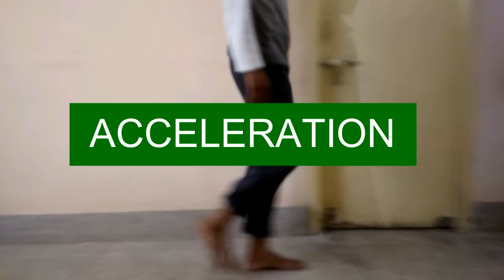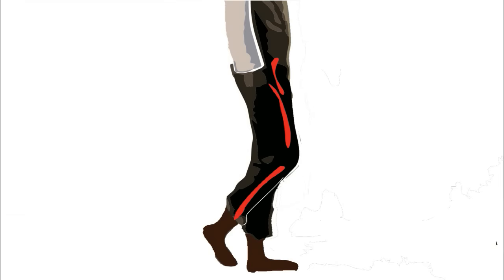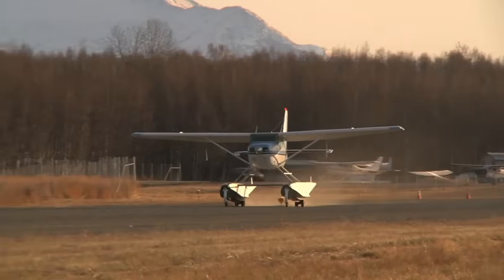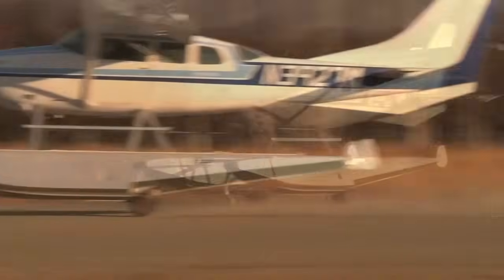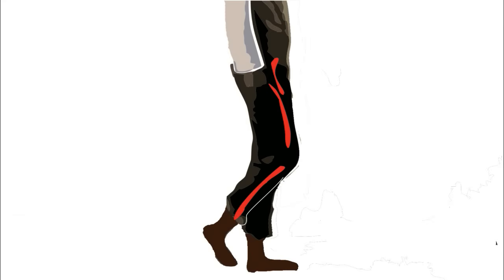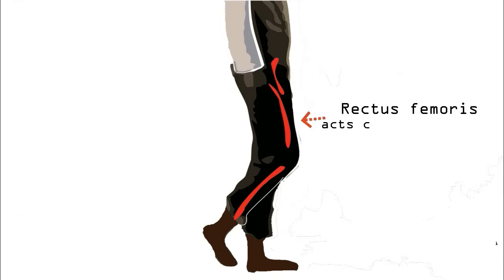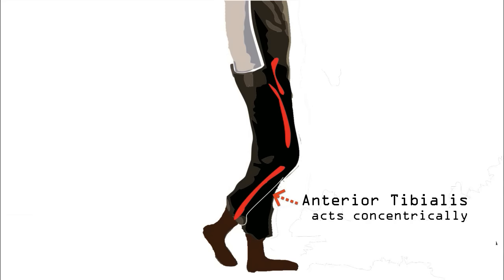Acceleration is a continuation of toe off when the leg just leaves the ground. After leaving the ground, the muscles act to gather the momentum to propel the leg forward. This is the result of action of the following muscles: the anterior tibialis acts concentrically to flex the hip; the rectus femoris acts concentrically to extend the knee; and the anterior tibialis acts concentrically to permit the forefoot to clear the ground.